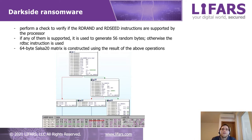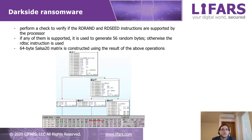The ransomware performs checks to verify if two specific instructions are supported by the processor. If any of these is supported, it will be used to generate 56 random bytes; otherwise a third instruction will be used to generate the bytes. In this case, one of those instructions was supported, so the malware generated a Salsa20 matrix using that instruction, as we can see in the second picture.